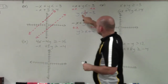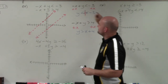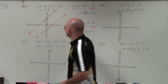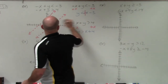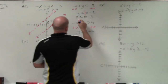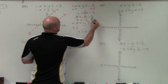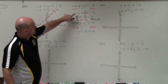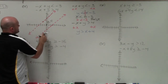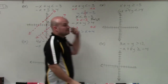For y is less than x minus 3, I'll choose the test point (0, 0), which is not on either line. Plugging in, I get 0 is less than negative 3, which is false for this line. That means all points above it are false and all points below it are true, so I shade below.